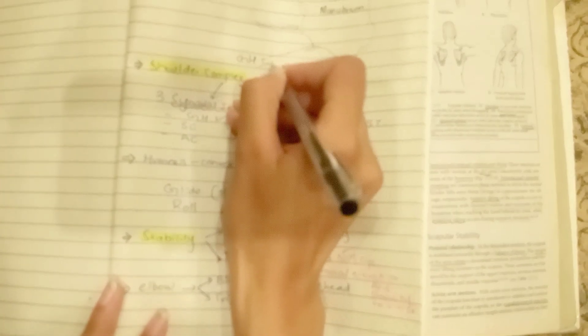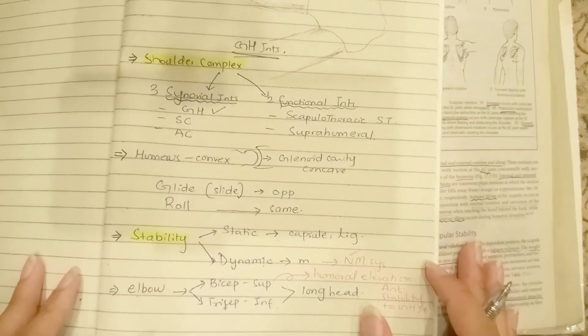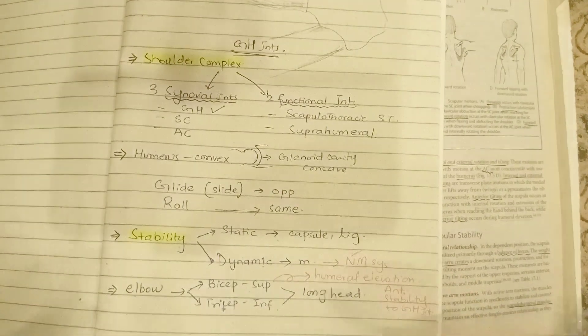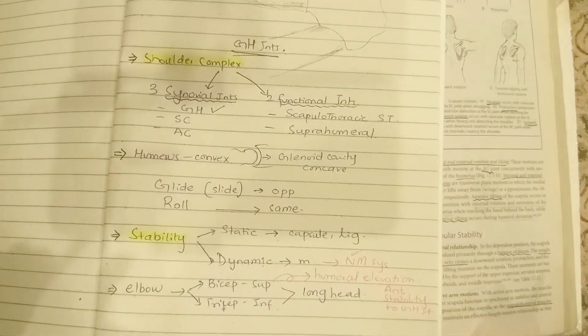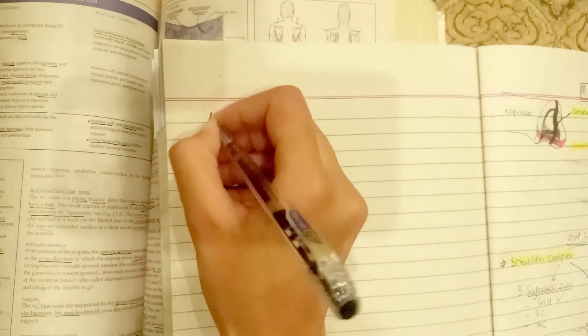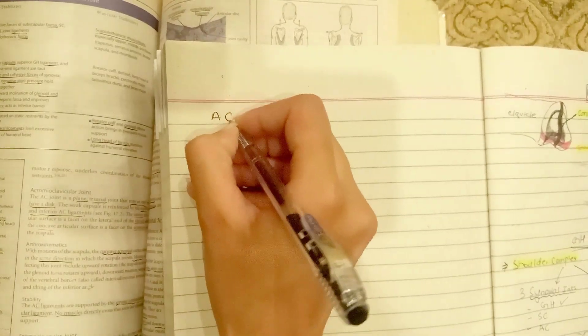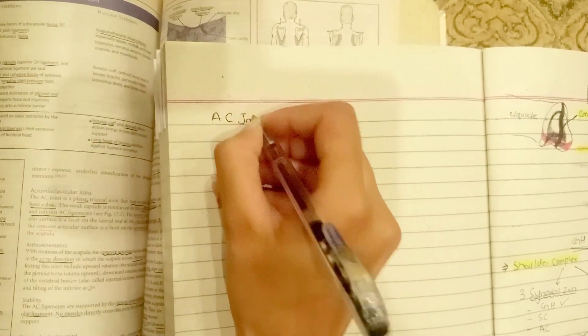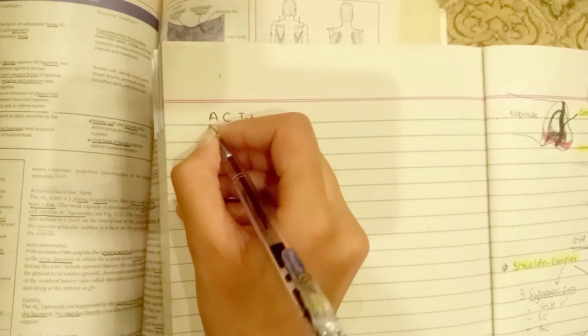I have jotted down all the important points, so you can take notes from them. Now we are going to discuss the other joints: the acromioclavicular and the sternoclavicular joints. Let's get started with the AC joint — the acromioclavicular joint. First, the AC joint is a triaxial joint.